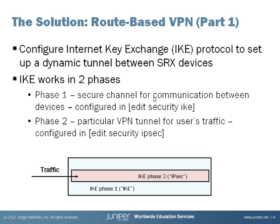Phase 1 is a secure channel for communication between devices, configured in the security IKE stanza of the configuration. Phase 2 is the particular VPN tunnel for user traffic, configured in the security IPsec stanza. The two SRX devices set up a Phase 1 channel, then using the keys of Phase 1 they set up a Phase 2 channel. User traffic is encrypted and authenticated using the keys of Phase 2.